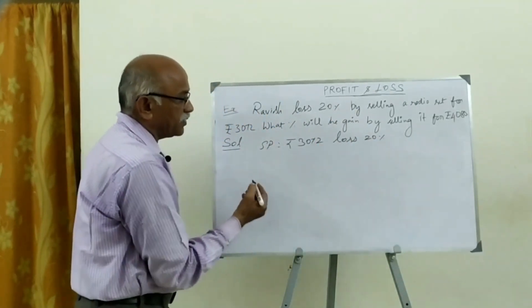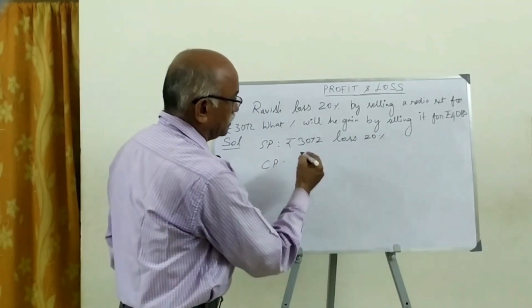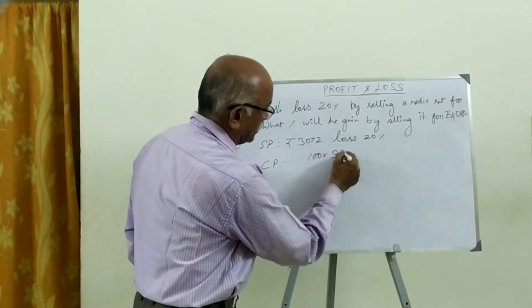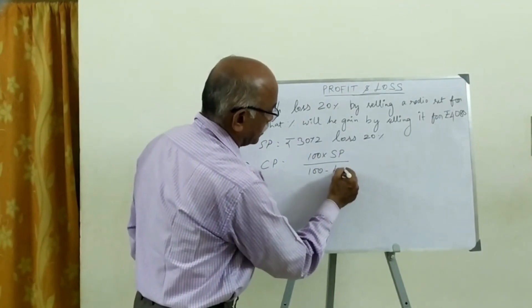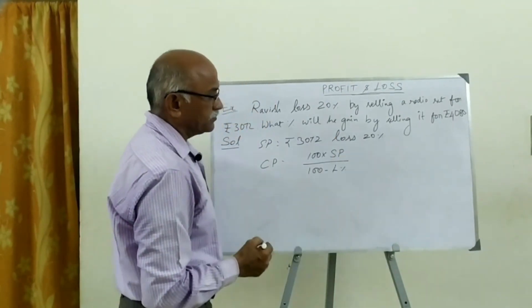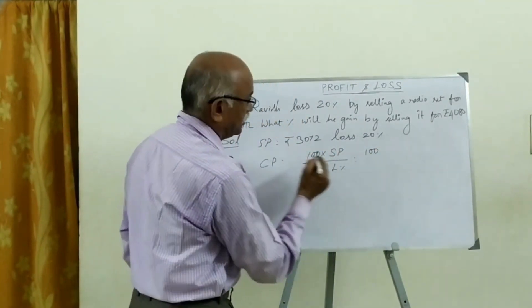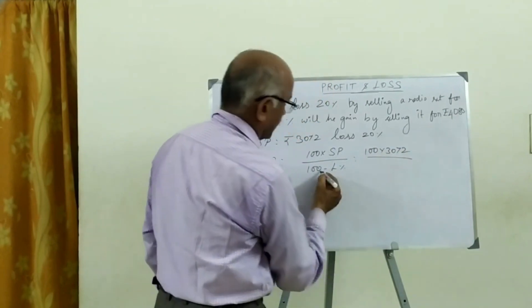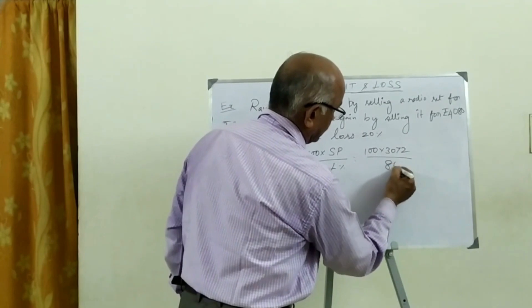Now, we are going to cost price. CP. 100 into SP divided by 100 minus loss percentage. Loss. 100 minus loss percentage. 100 minus 20 is 80.